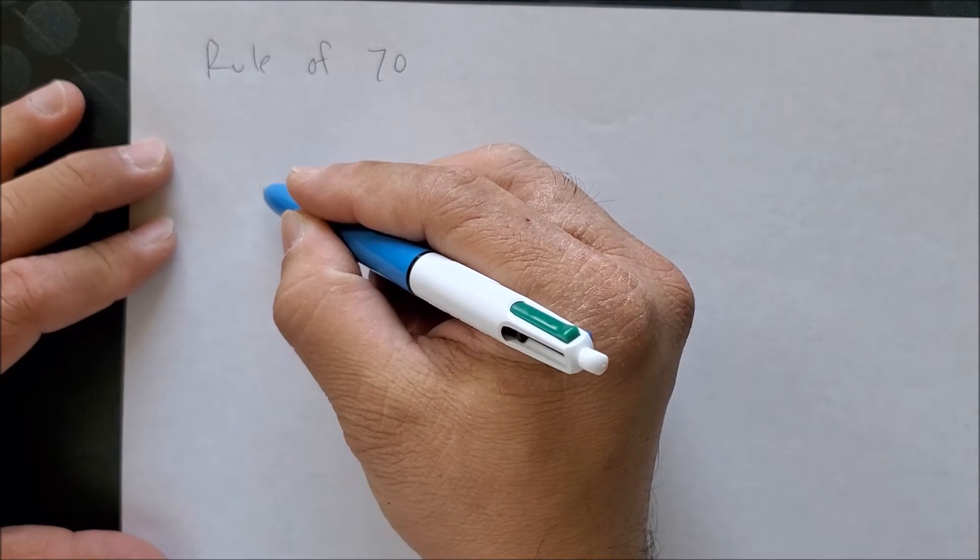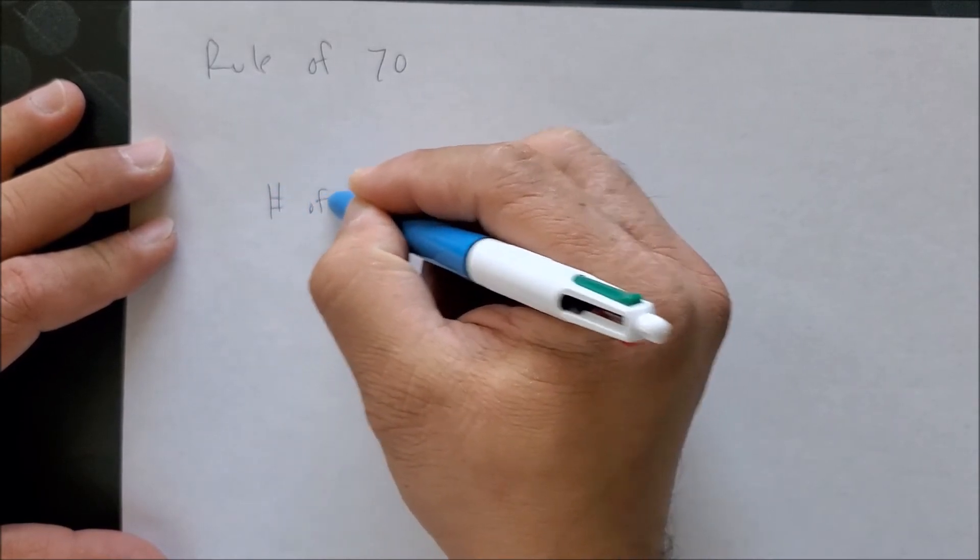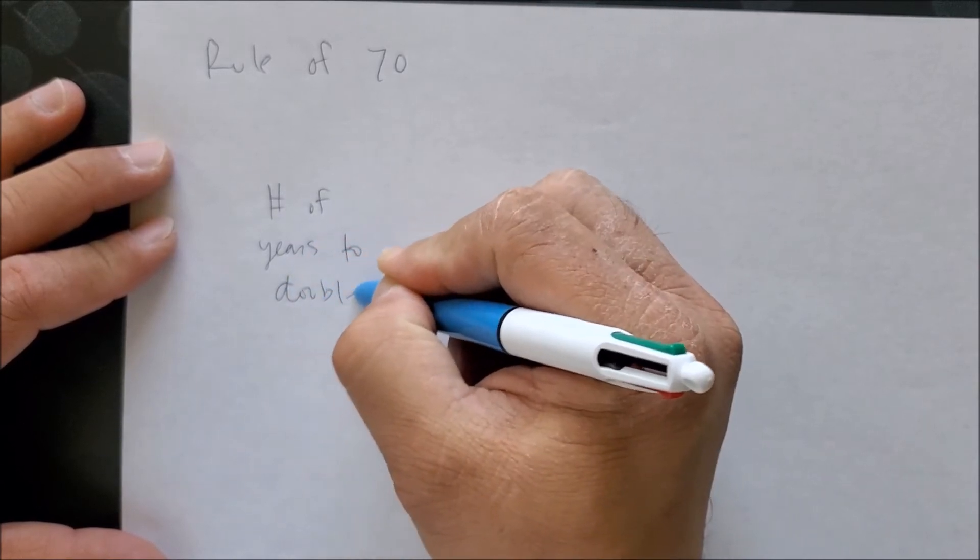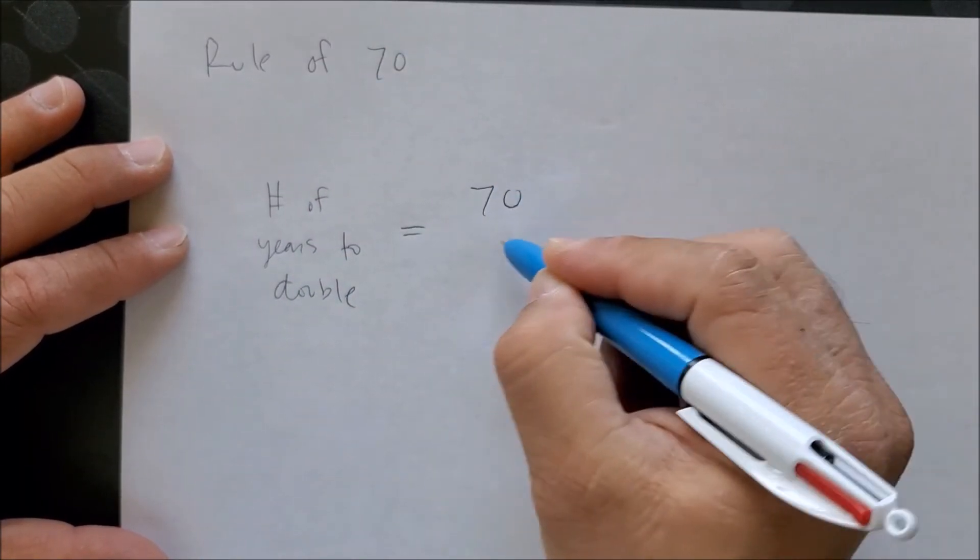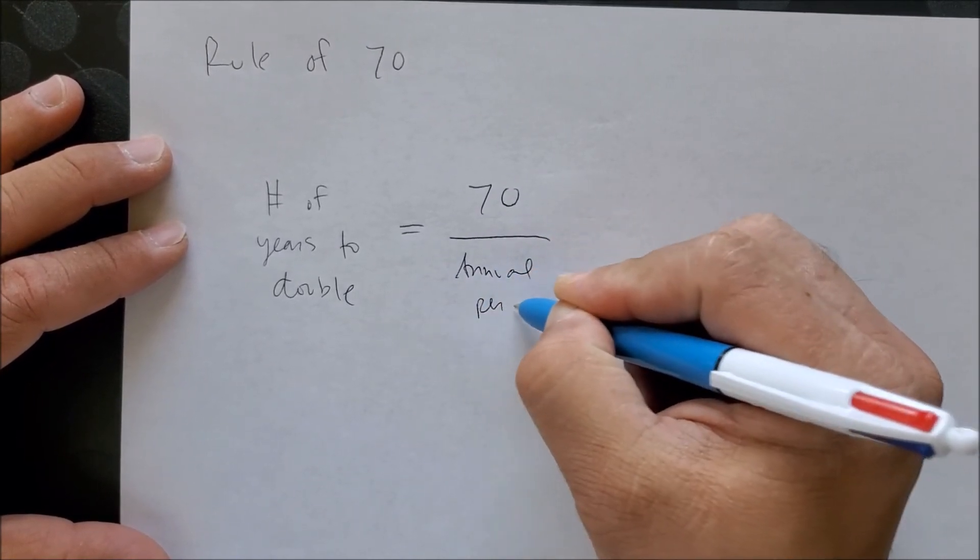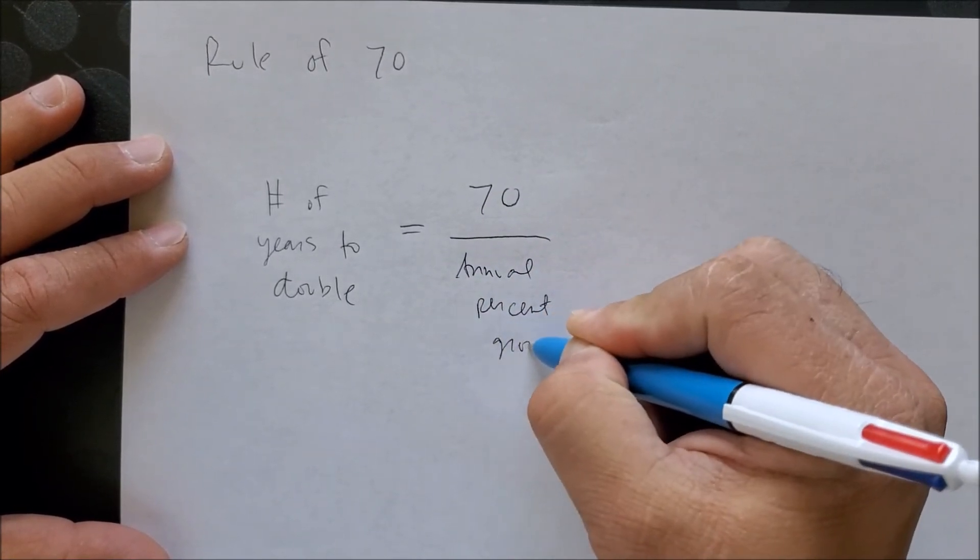So all that we need here is to put on the left-hand side the number of years to double, and that's a function of 70 over the annual percent growth rate.